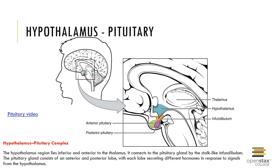The hypothalamus-pituitary complex is a very important connection. The hypothalamus lies inferior and anterior to the thalamus and connects to the pituitary via the infundibulum. The pituitary gland consists of an anterior and posterior lobe, is known as the master gland, and is located within the sella turcica of the sphenoid bone. It is connected to the hypothalamus via the infundibulum and a network of capillaries called the hypophyseal portal system.